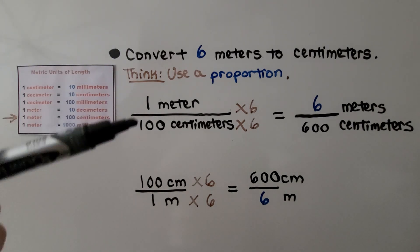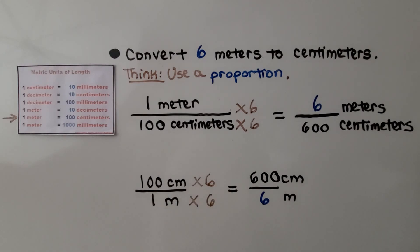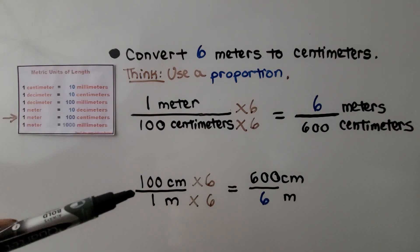Do you see? We got the same amount, 600 centimeters. Either way, they're proportions, but this one is a unit rate.